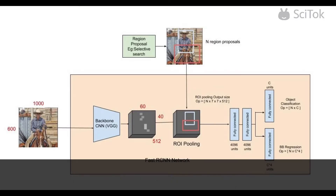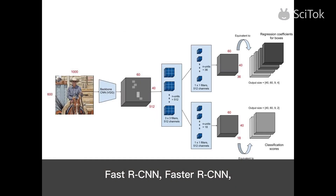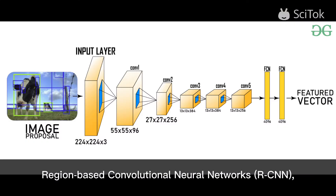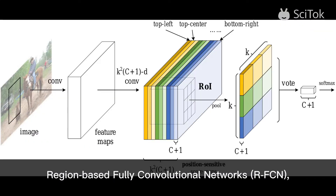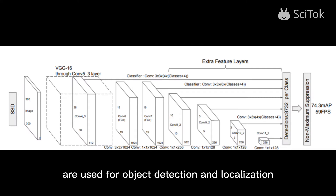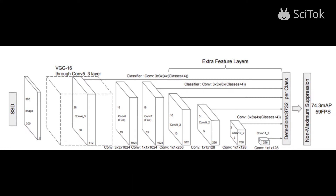Several model architectures like FastRCNN, FasterRCNN, HAG, YOLO, RCNN, RFCN, SSD, etc. are used for object detection and localization in modern-day computer vision applications.